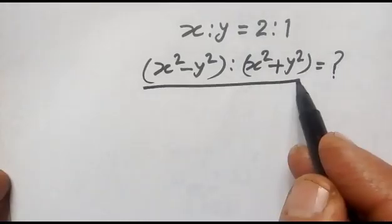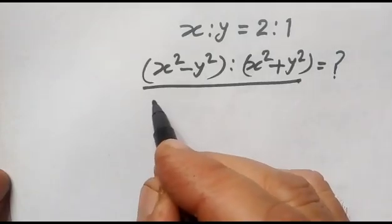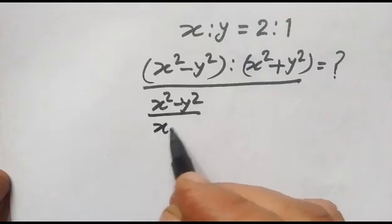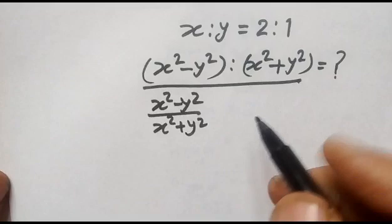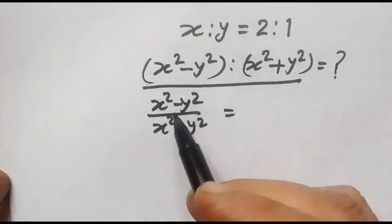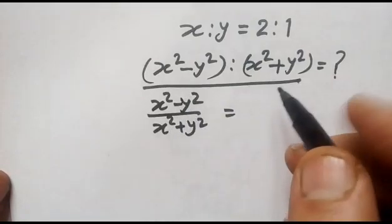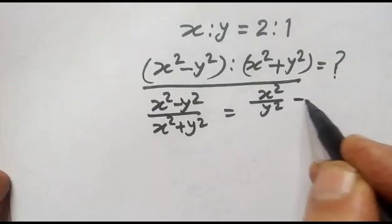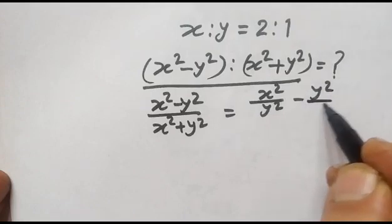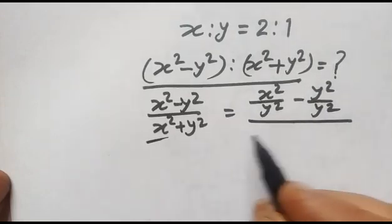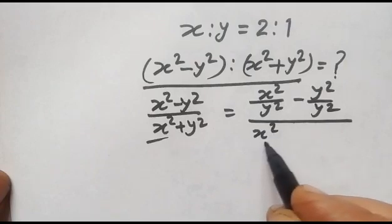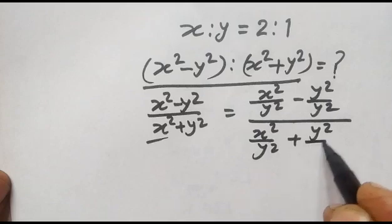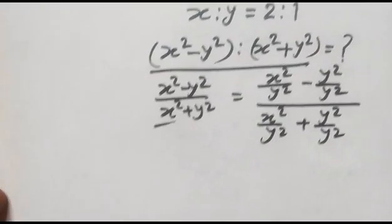Now we can write this as x squared minus y squared over x squared plus y squared. We will divide the numerator and denominator by y squared: x squared over y squared minus y squared over y squared, over x squared over y squared plus y squared over y squared.